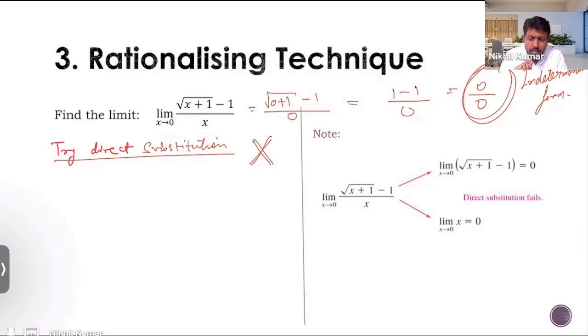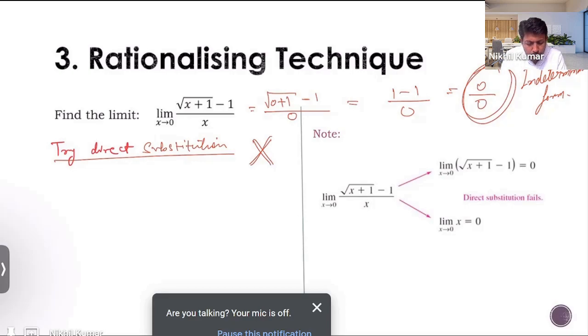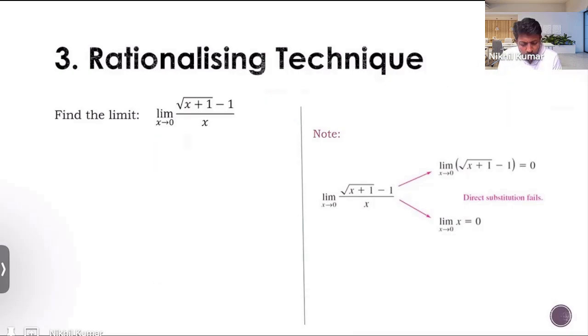Let's try the factorization method. Look at this function and tell me if you would be able to factorize it. Basically, there is only one factor x in the denominator. Can I somehow get x in the numerator? All the techniques of factorization that we know of are not going to help us here. What do we do then? That's where this new technique called the rationalizing technique comes into picture.